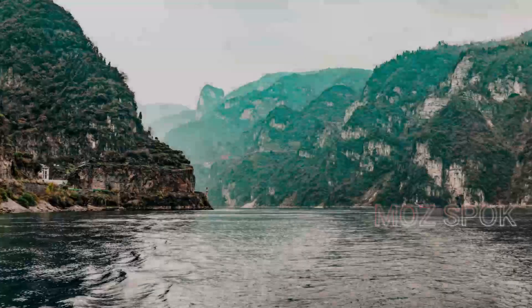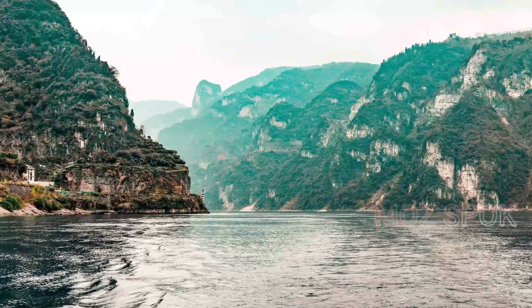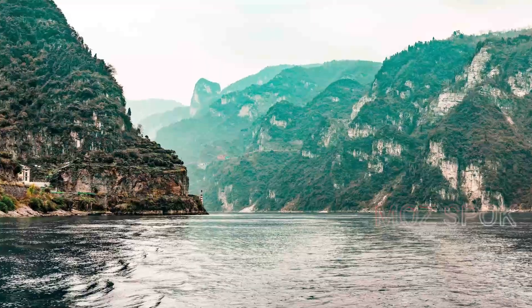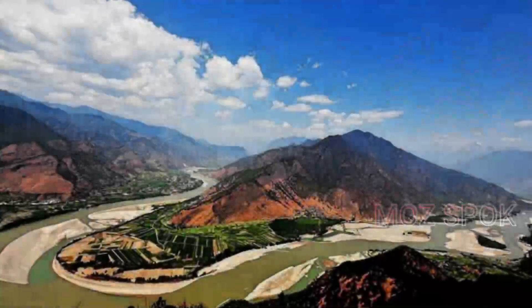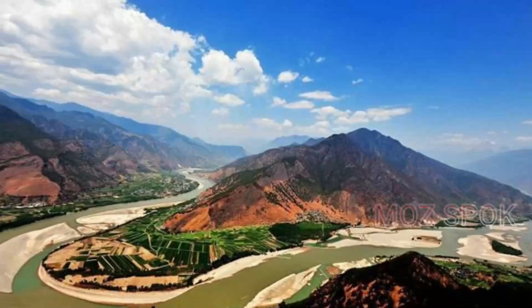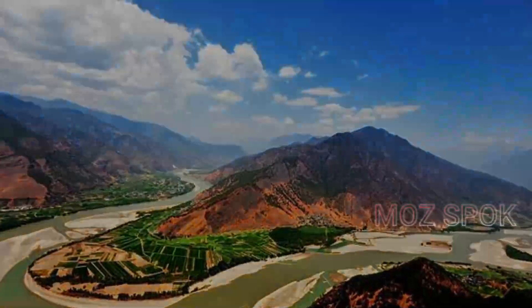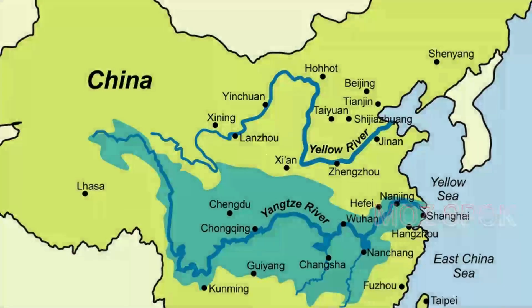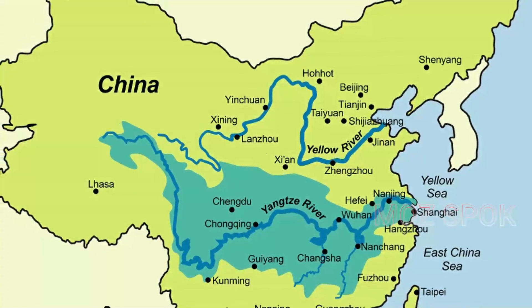The Three Gorges region in China was basically a geohazard-prone area prior to construction of the Three Gorges Reservoir (TGR). After construction of the TGR, the water level was raised from 70 meters to 175 meters above sea level (ASL), and annual reservoir regulation has caused a 30-meter water level difference after impoundment of the TGR since September 2008.